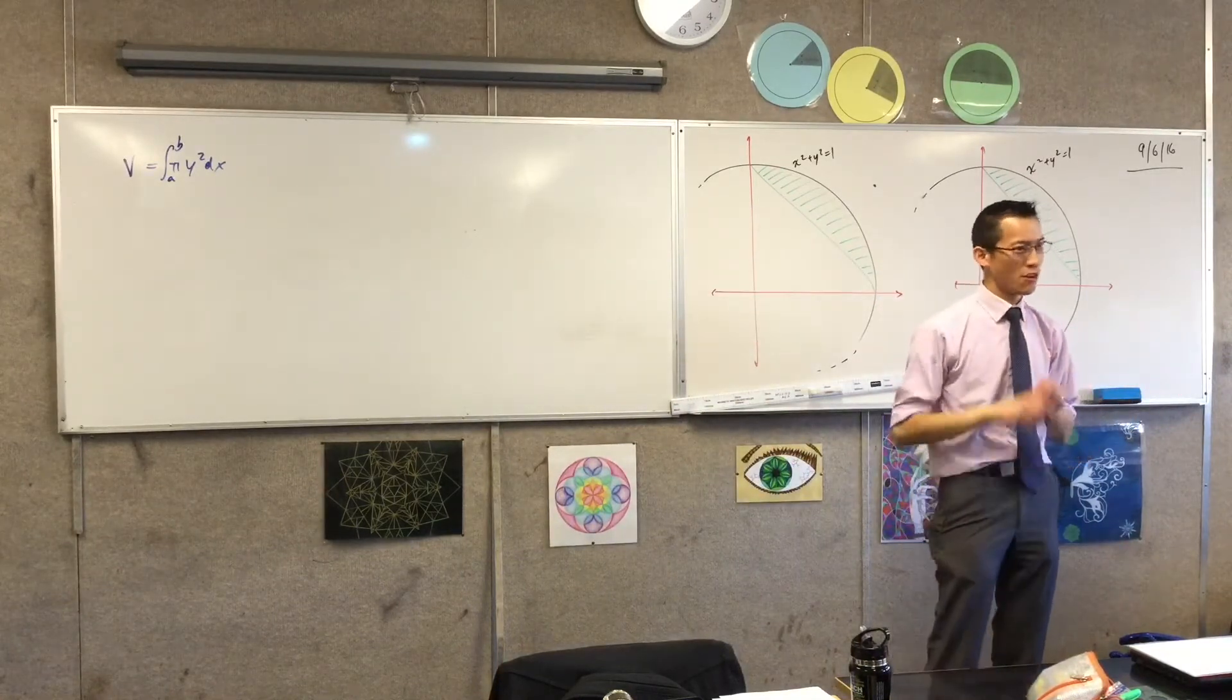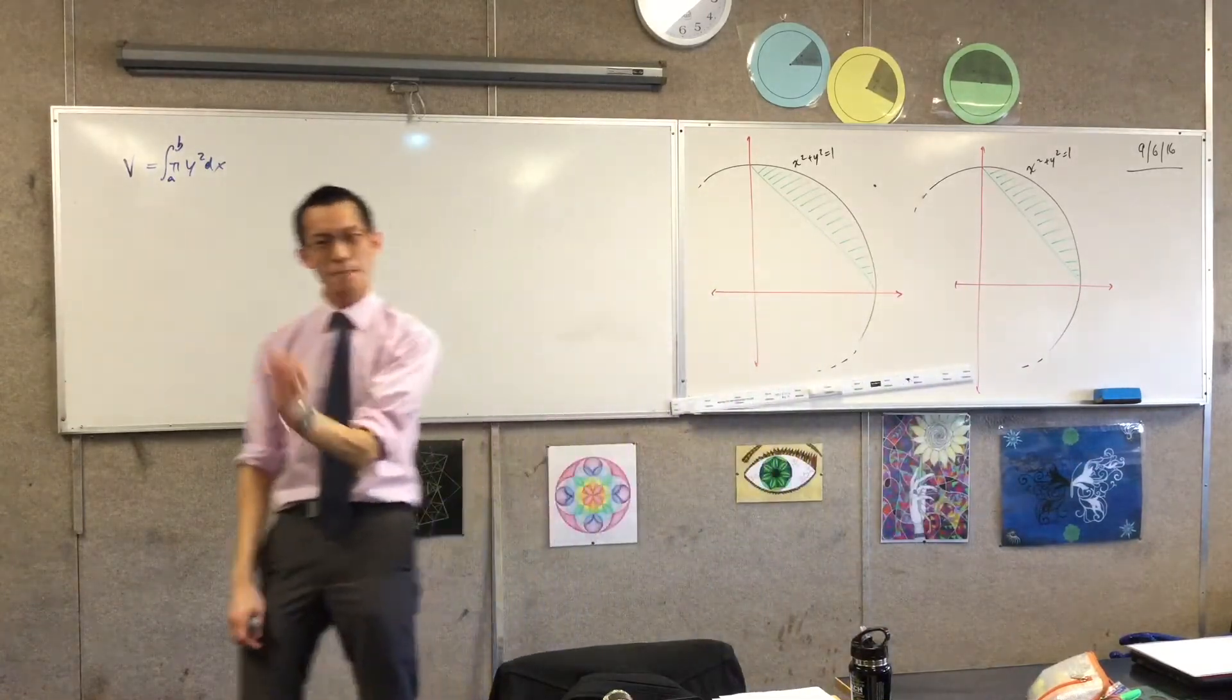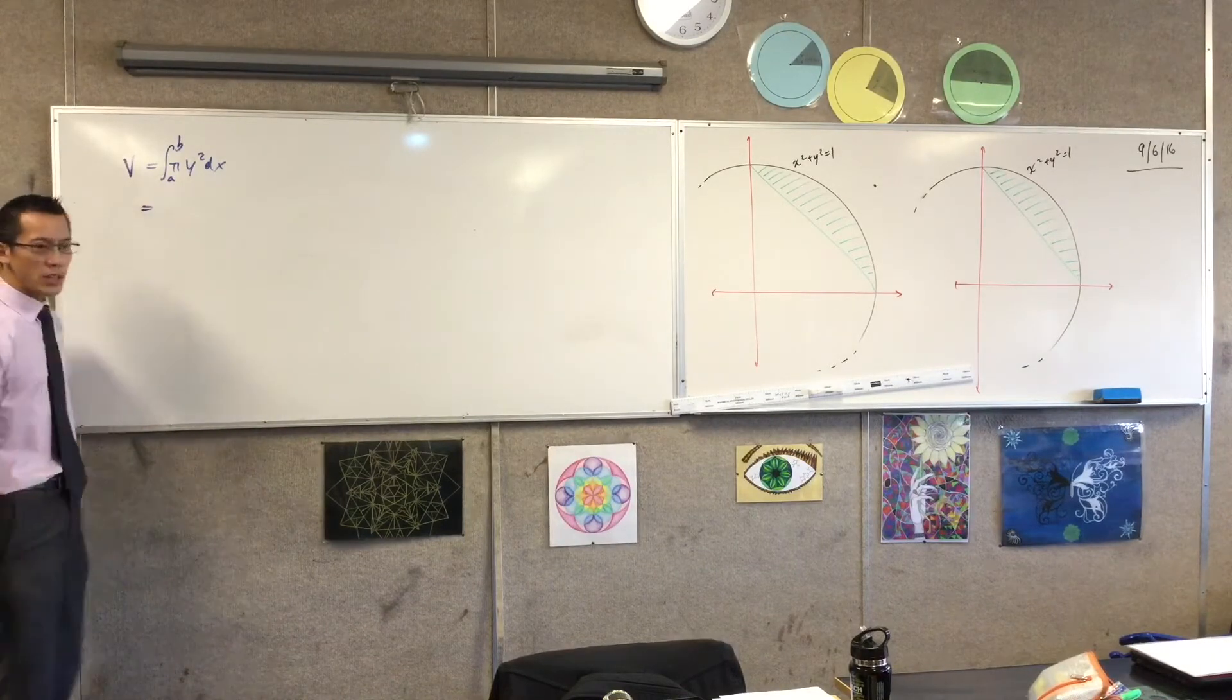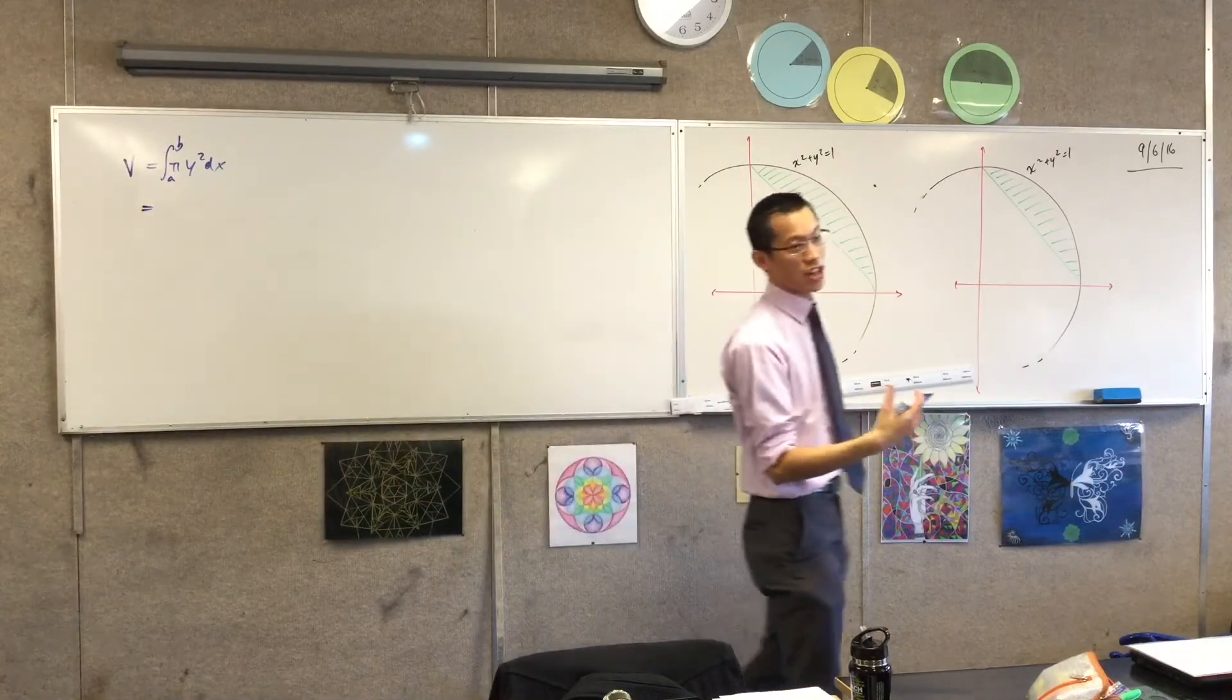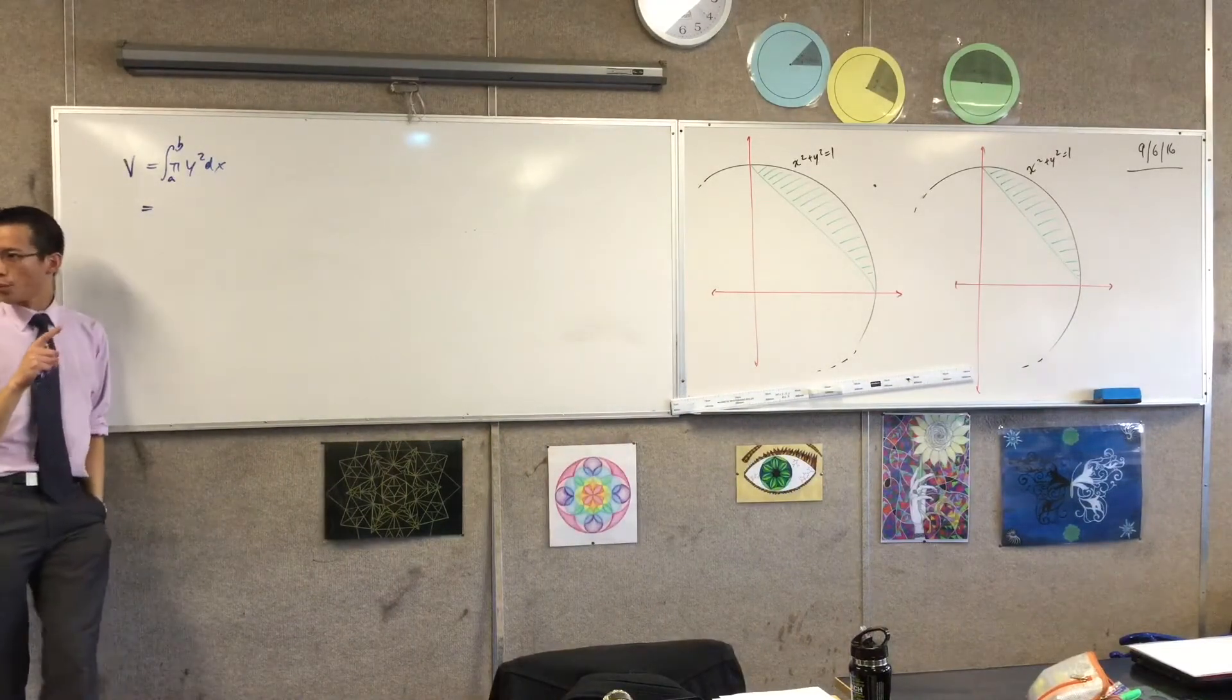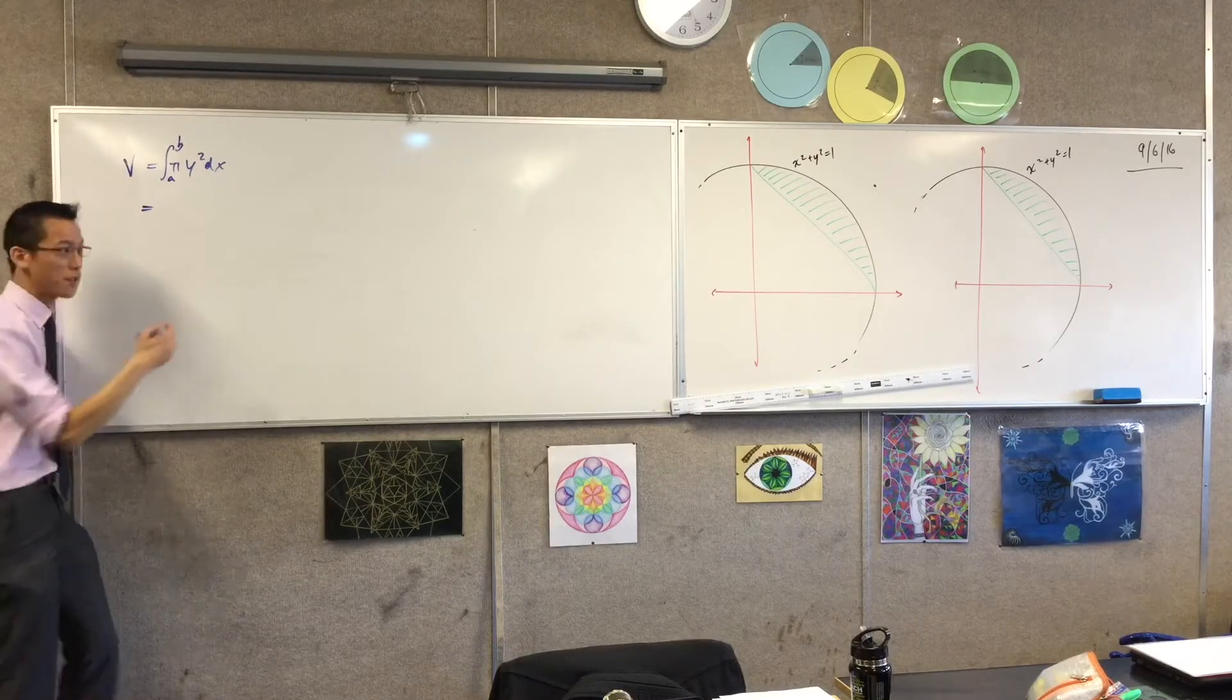However, mathematicians always try to push the boundaries and dig deeper into what the true nature of these kinds of things are. You might have remembered that we said this integral actually skips a step, it disguises, it veils something that's happening before. Where does the integral come from?